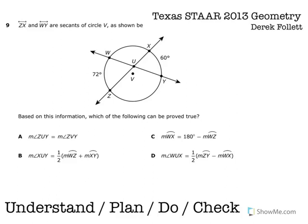Okay, let's try to understand this problem. Secants, what are secants? Well, those are lines that go through a circle that do not go through the center. You can see the center is V, that's why it's called circle V, and they do not go through the center. They go through point U.